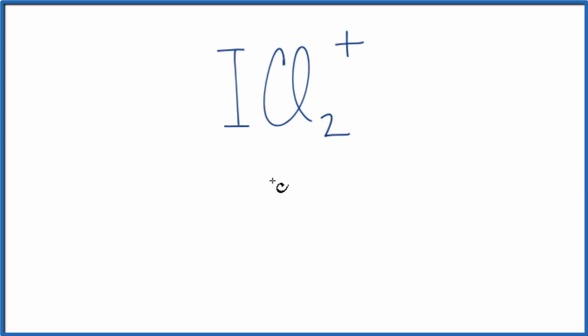In this video, we'll write the Lewis structure for ICl2+, the iodine dichloride cation. Let's count the valence electrons first and then draw our Lewis structure.